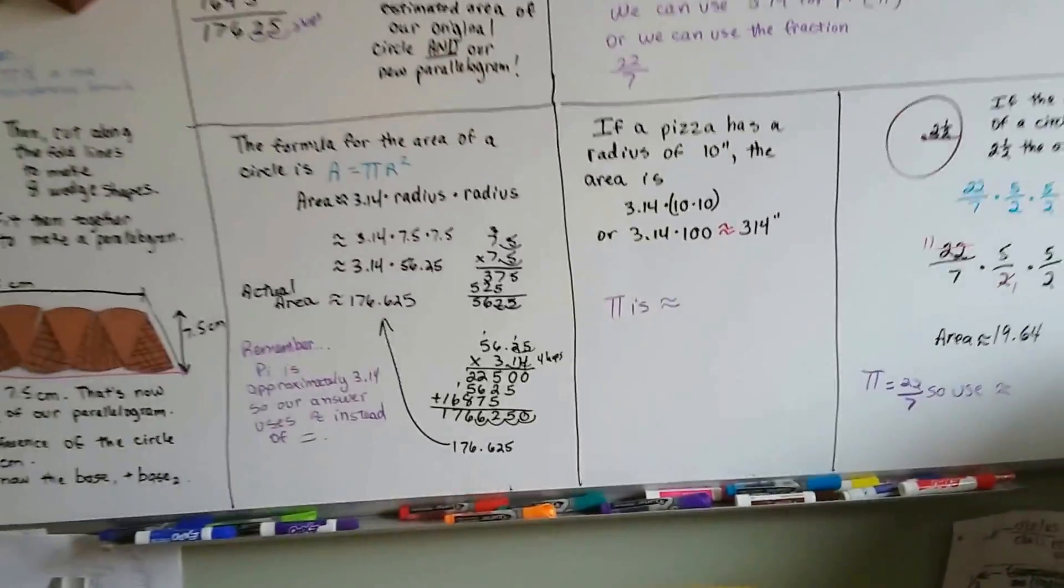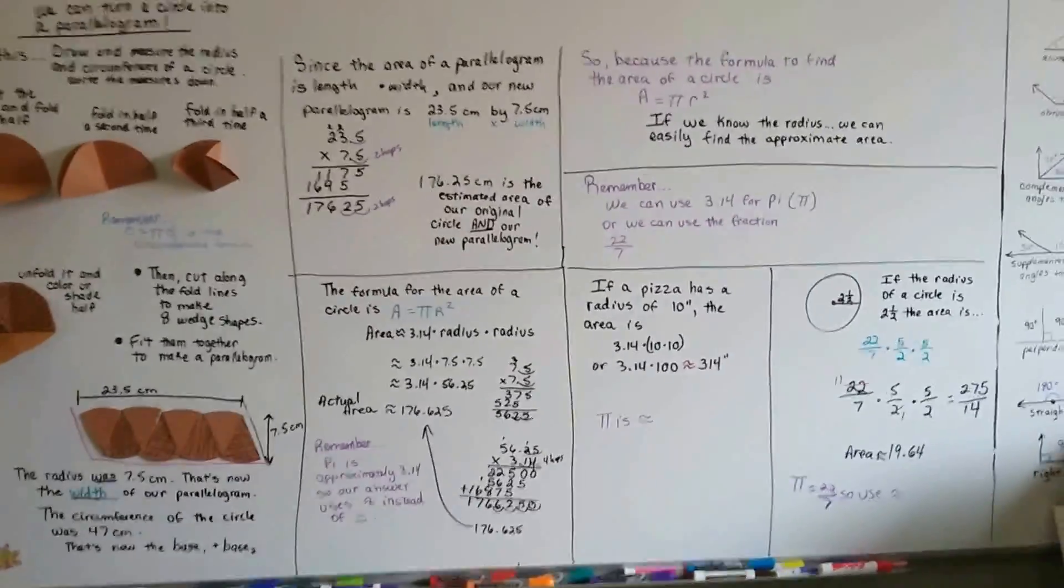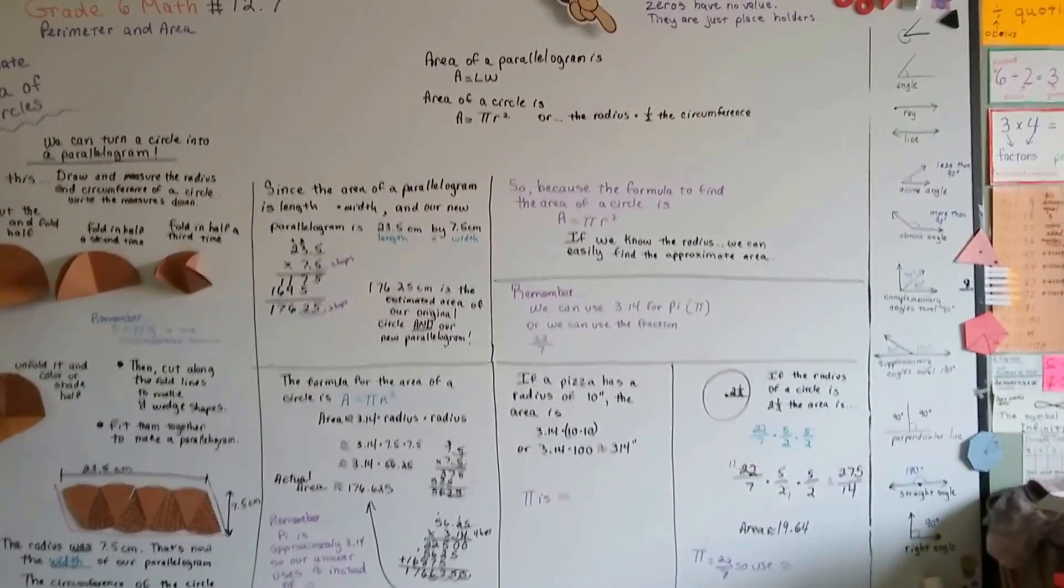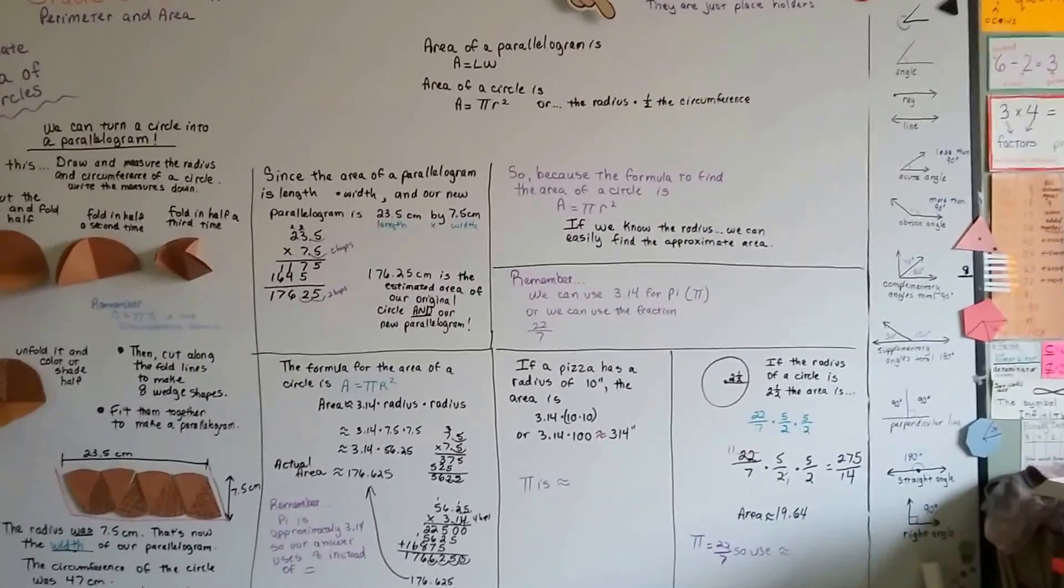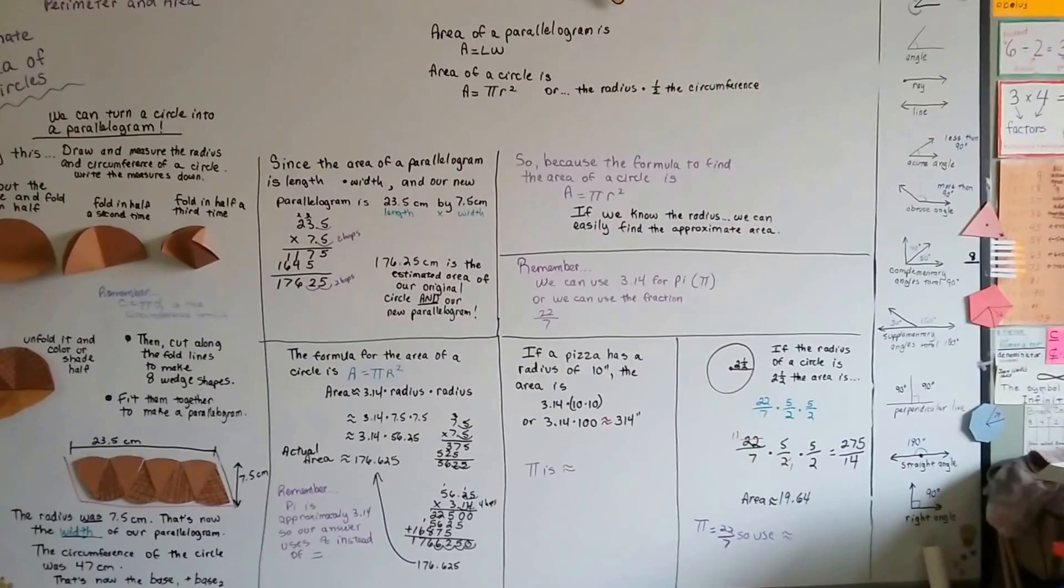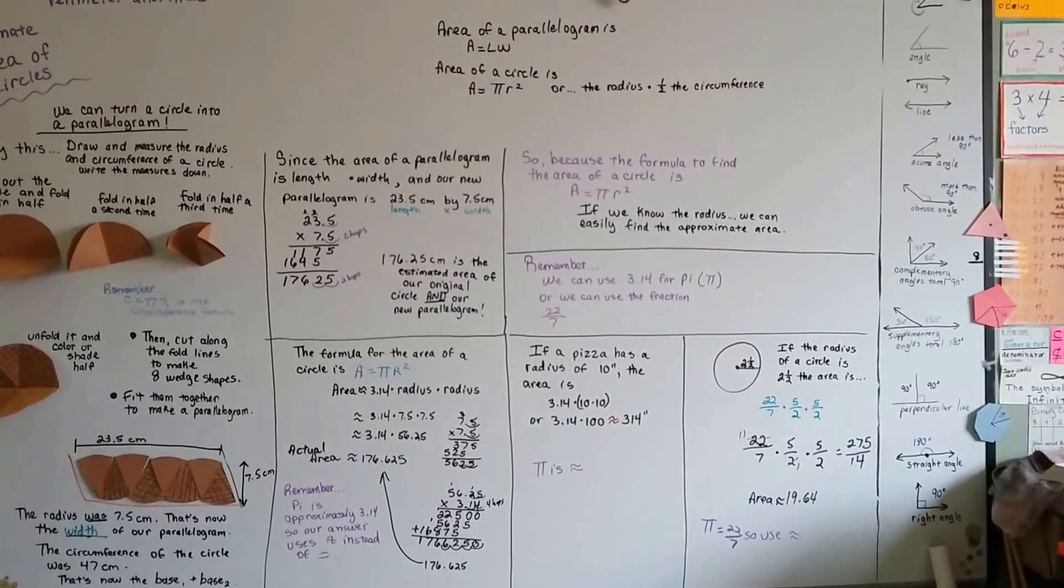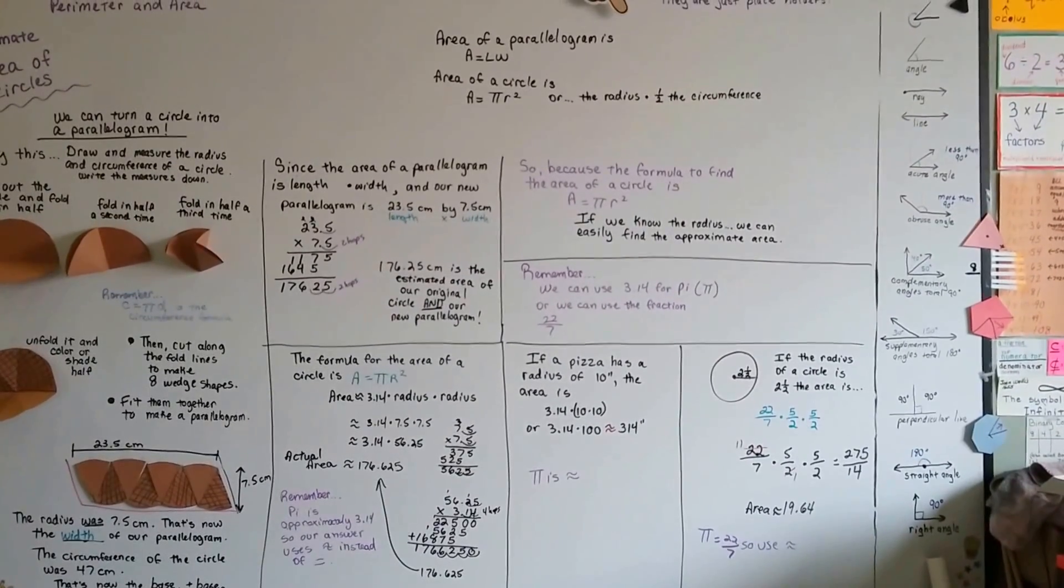So this is just estimating the area of circles. In our next video, 12.8, we're going to seriously work on the area of circles. But now you know how to turn a circle into a parallelogram and find the area with just the length and the width. Isn't that cool? See you next video. Bye.